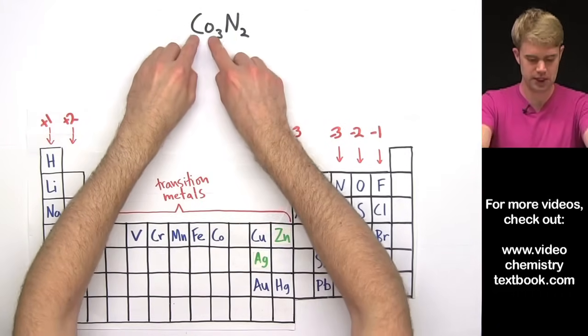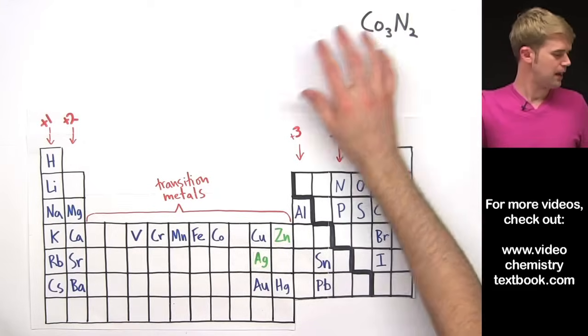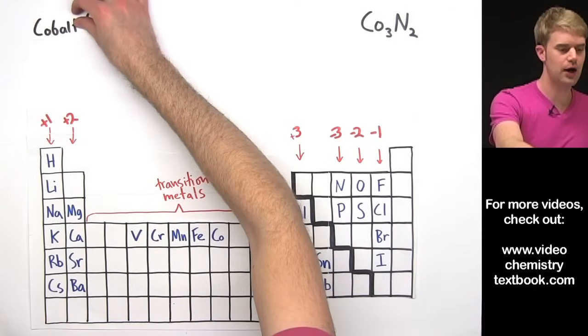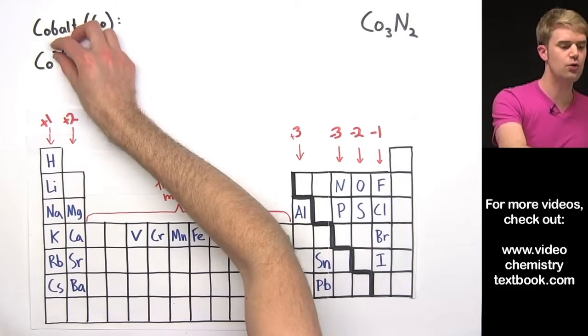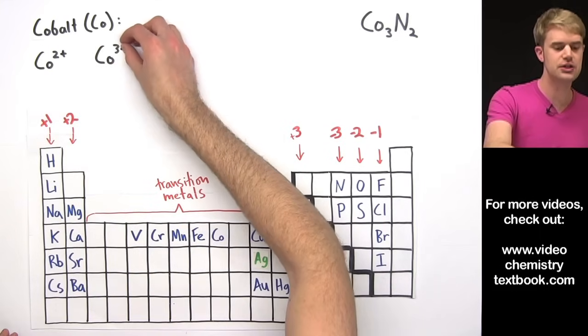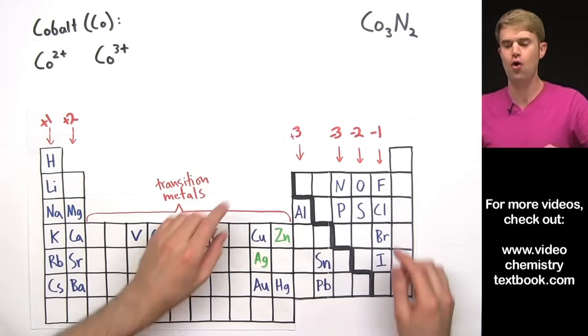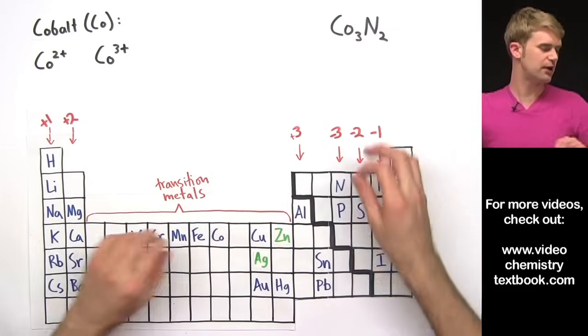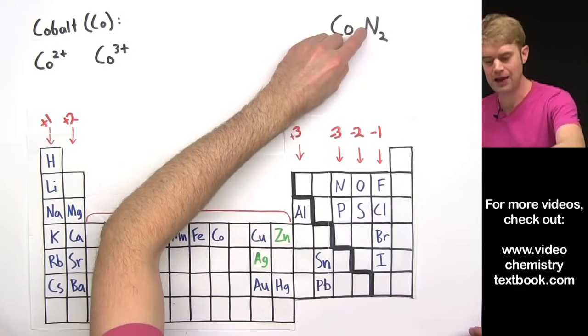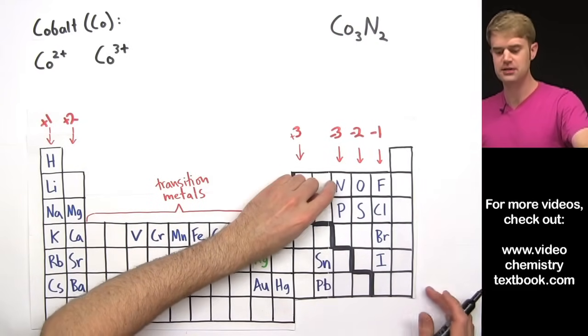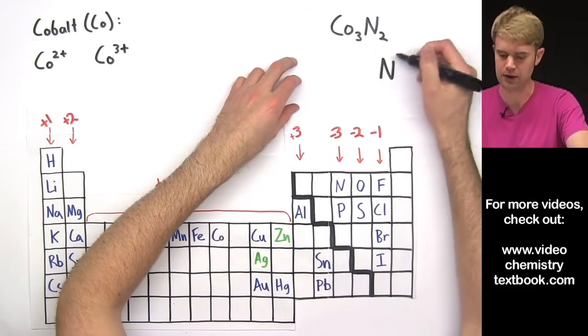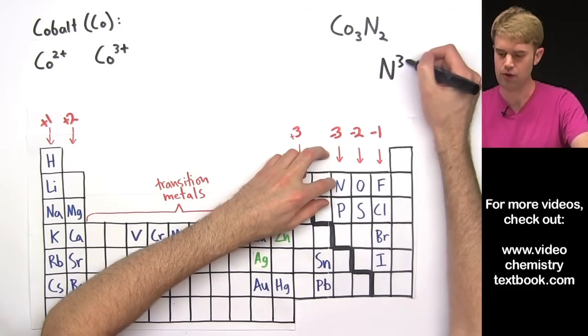Co3N2. So Co here is cobalt. And cobalt can make 2 different ions. It can make a Co2+ ion and a Co3+ ion. What is its charge here? Let's figure out. We'll focus in on N, which is in this column here, which means that its charge in an ionic compound is always N3-.